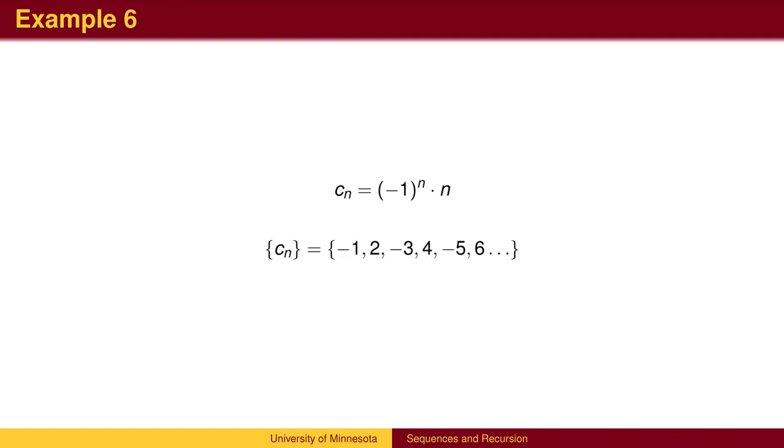To get terms to alternate in an explicit definition, we can use negative 1 to the nth power. When n is even, we will get positive 1, and when n is odd, we will get negative 1. This will cause the terms to alternate in sign.